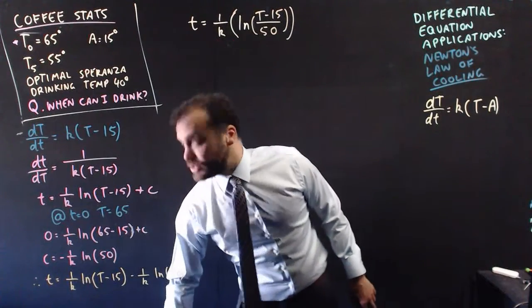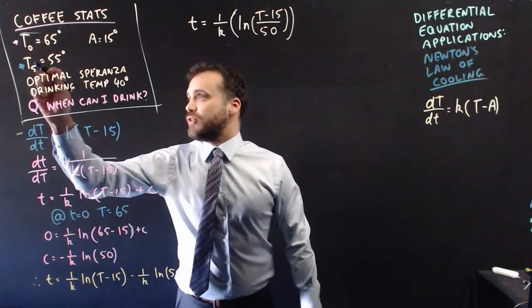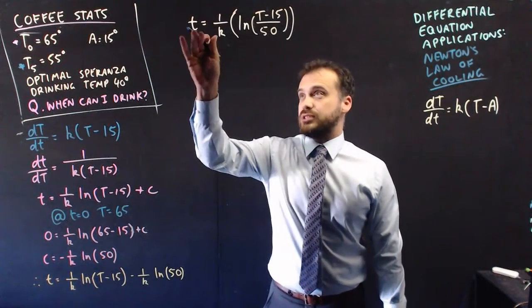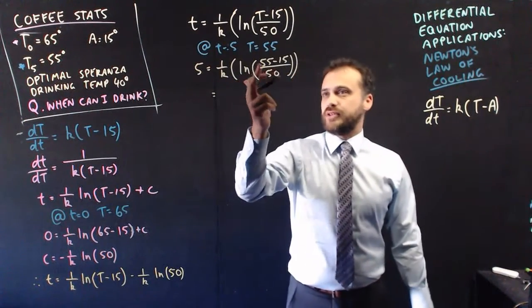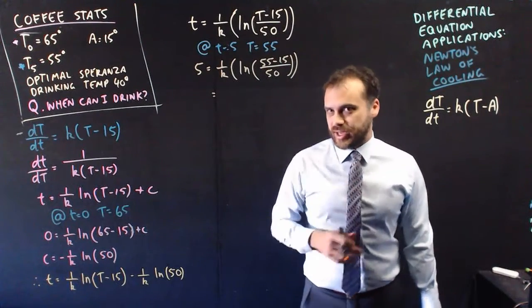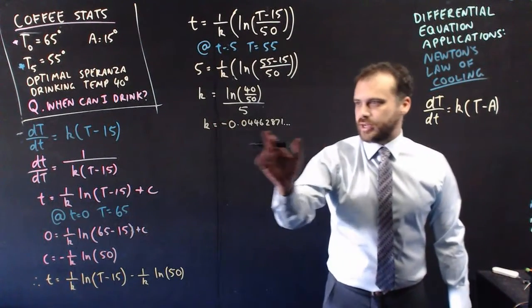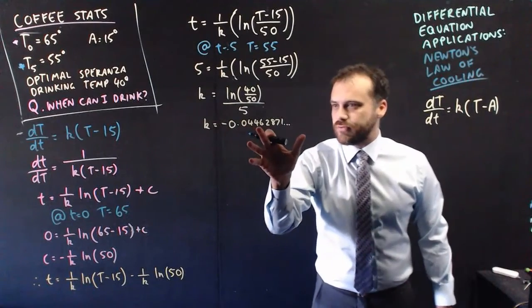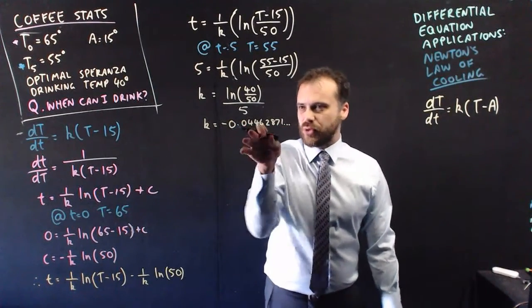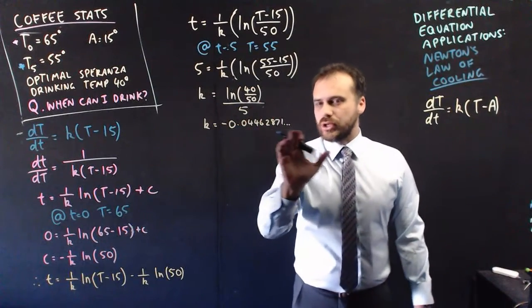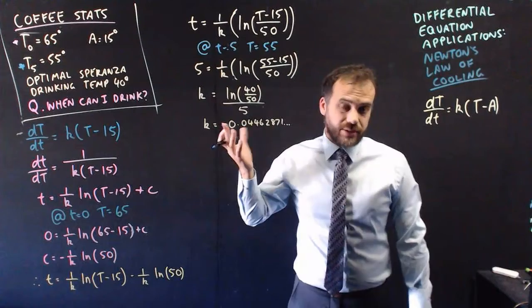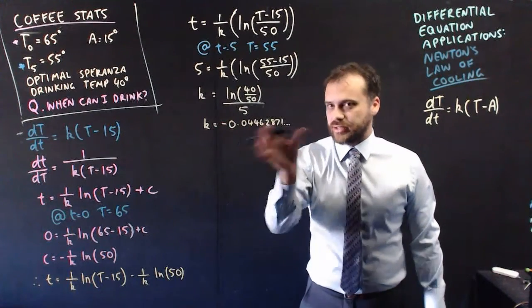Now we do have some extra information here. We know that at time 5, the temperature was 55 degrees. Let's sub that in for t and T. So I've subbed in my 5, I've subbed in my 55. That can simplify, obviously. I can rearrange it and isolate k. Now I've rearranged and then solved for k, and I get negative 0.04462871 dot dot dot. I get nervous here with these very small numbers, 4 hundredths. So I keep a lot of decimals here because that can really change my answer. So keep it in your calculator memory and use that exact value there.